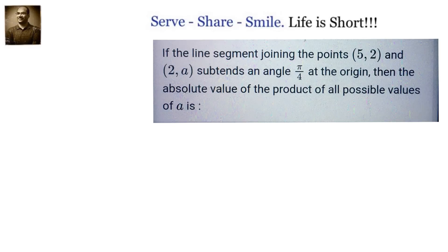If the line segment joining the points (5,2) and (2,a) subtends an angle 45 degrees at the origin, then the absolute value of the product of all possible values of a is. If the line segment joining the points (5,2), (2,a) subtends an angle π/4 at the origin,